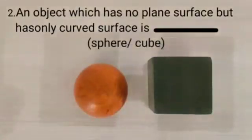Dear students, now our second fill up is, an object which has no plane surface but has only curved surfaces, dash. Here we have 2 options, sphere and cube.